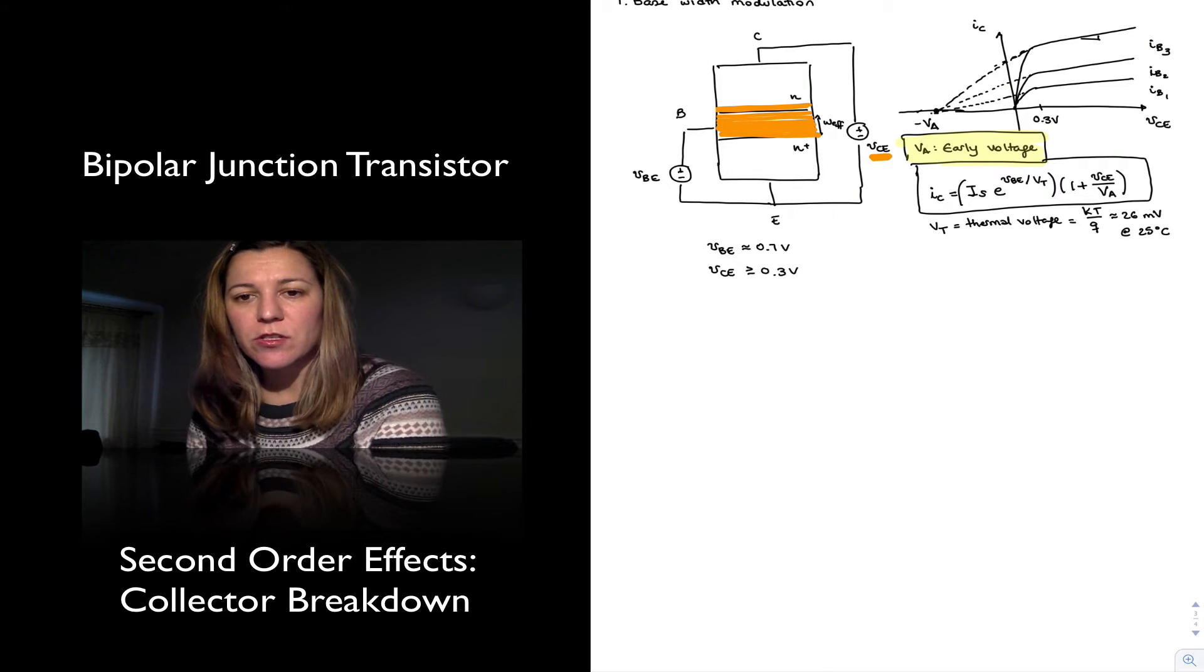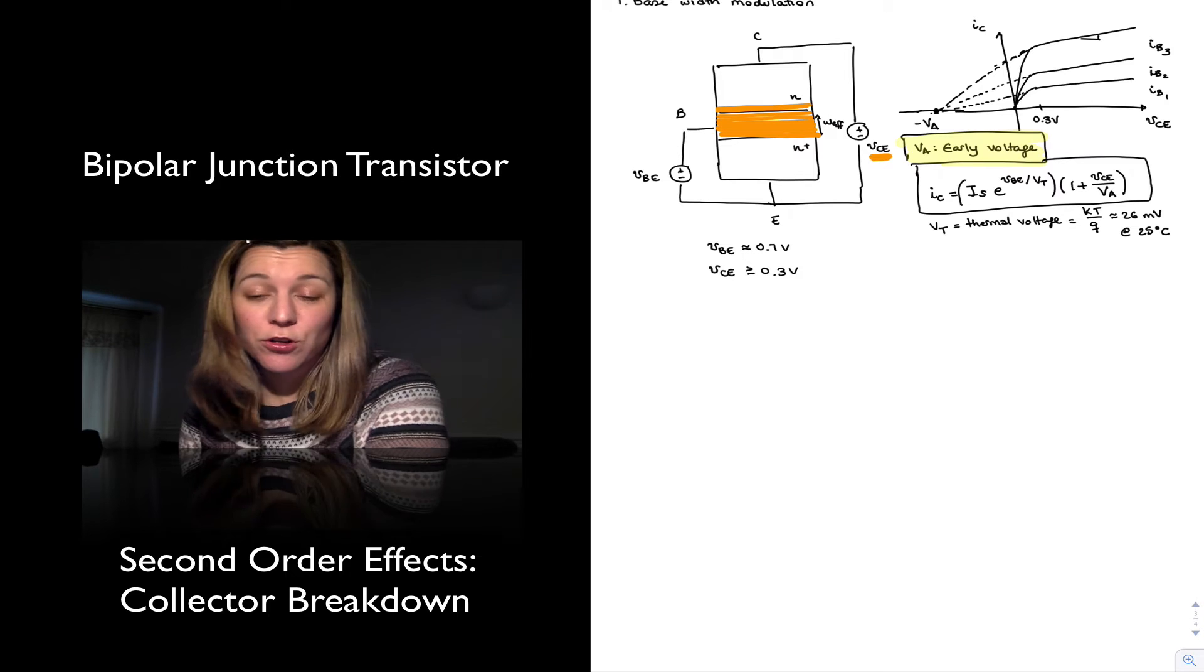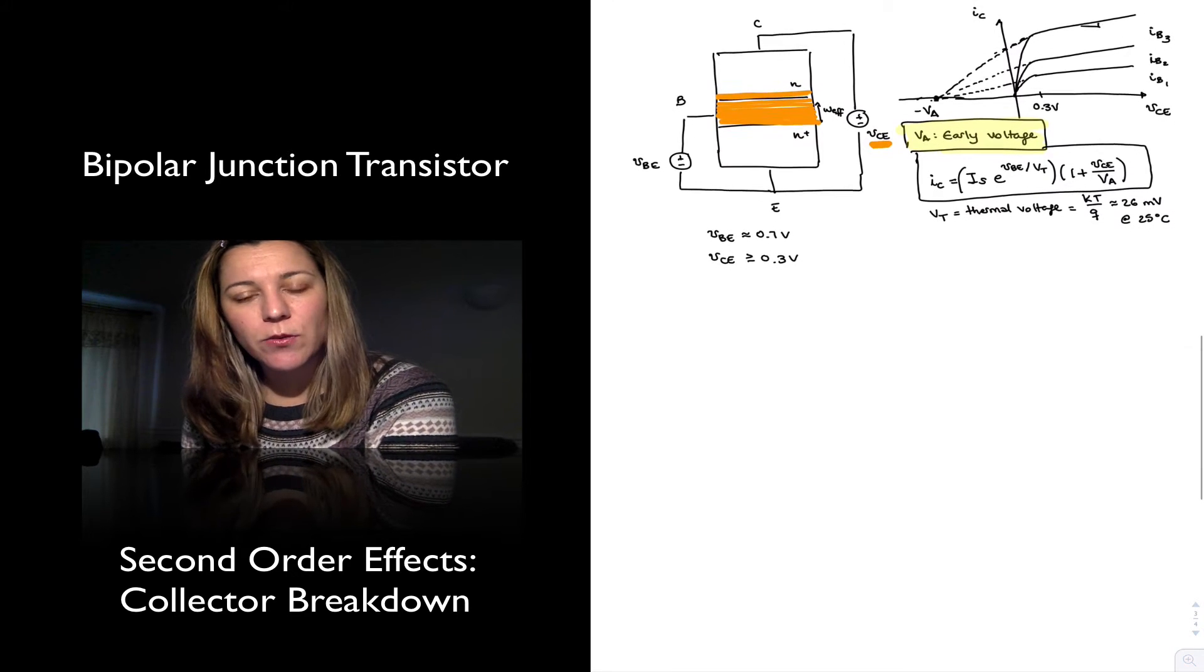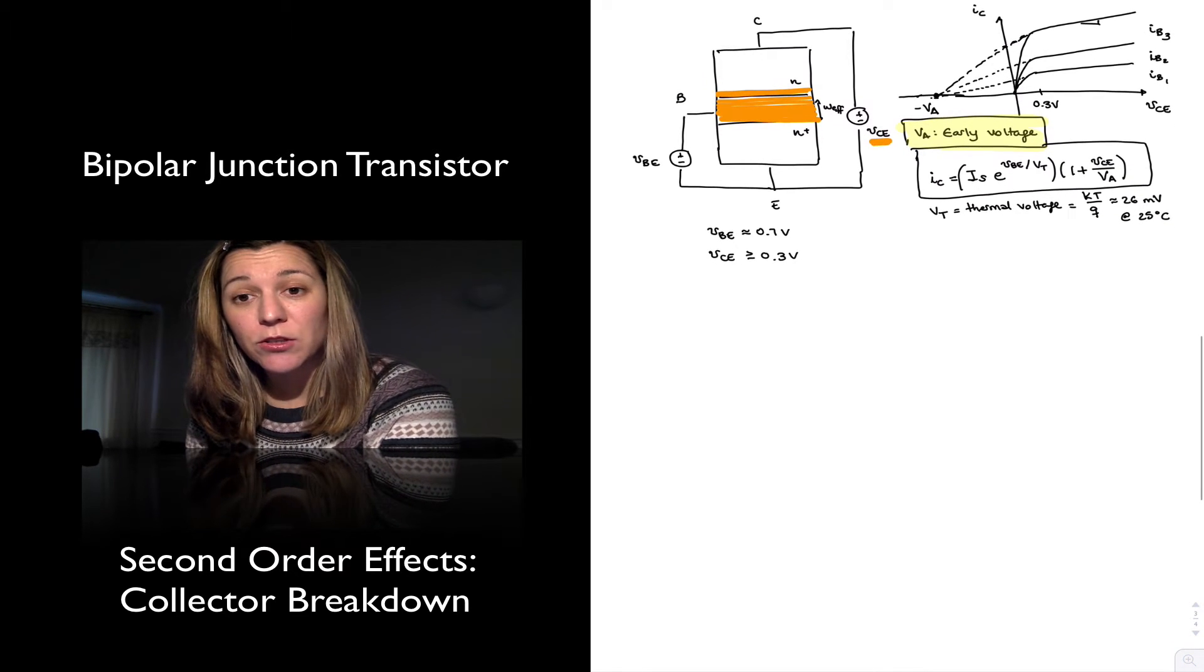Hello. So the second order effect, or the second non-ideality that we're going to talk about is collector breakdown.